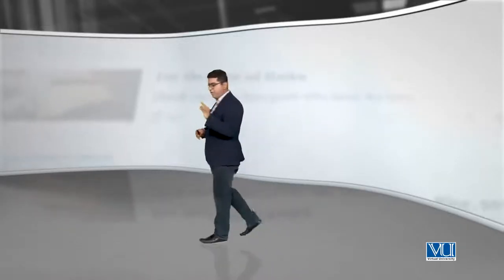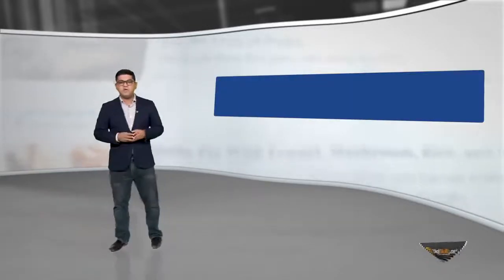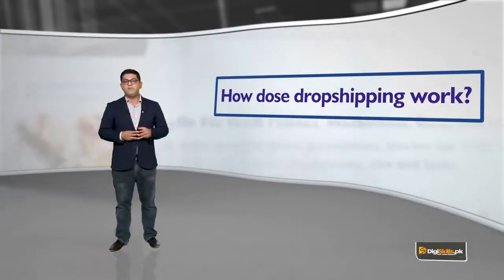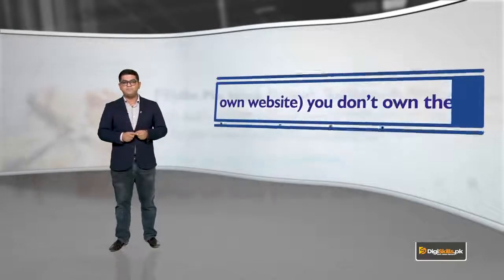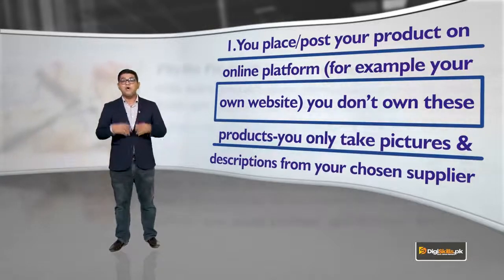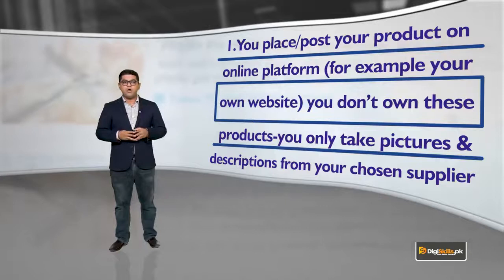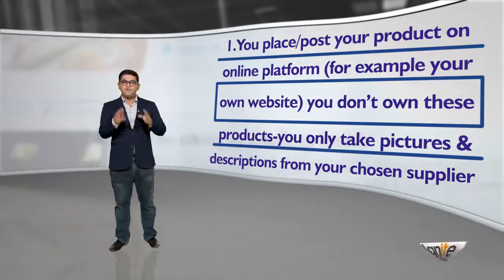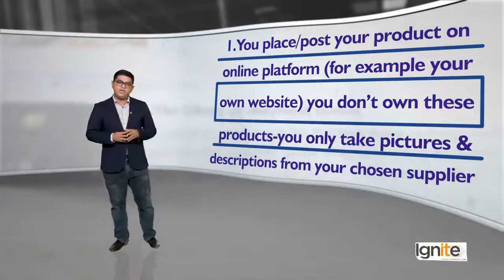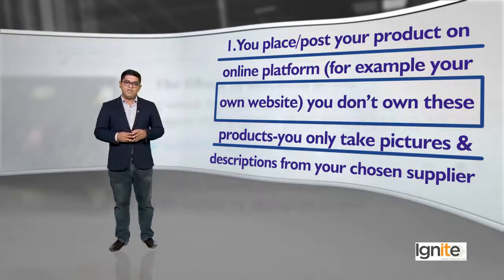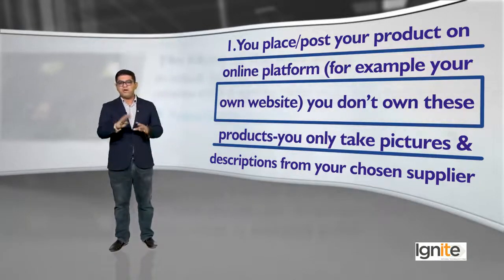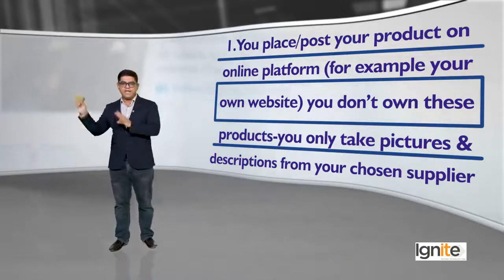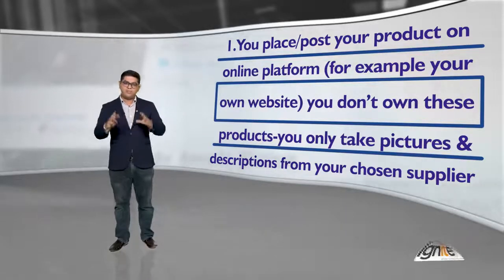Kya hai wo five-step process jis se drop shipping kaam karti hai? Number one: you place or post your products on an online platform. For example, jo aapki WordPress ki website hai, wahan aap products ki listing place karenge. You don't own these products — yeh products aap own nahi karte. Ho sakta hai China mein koi vendor baitha ho jo in products ko bana raha ho.